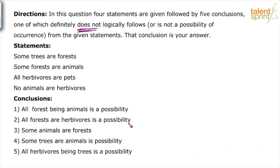There are four statements. Look at the statements: some trees are forests; some forests are animals; all herbivores are pets; no animals are herbivores.